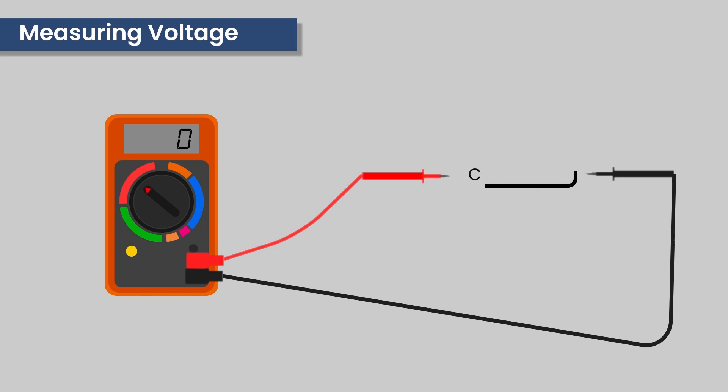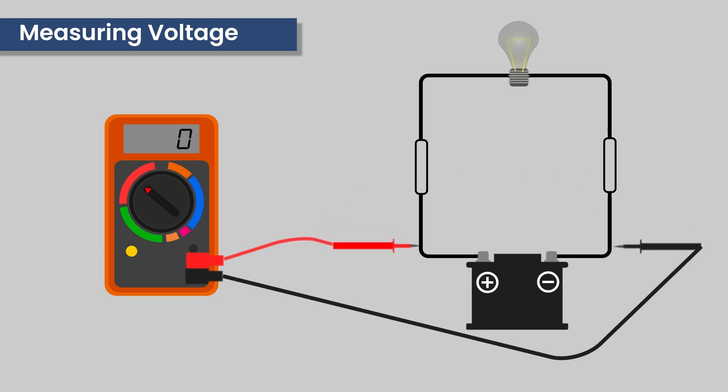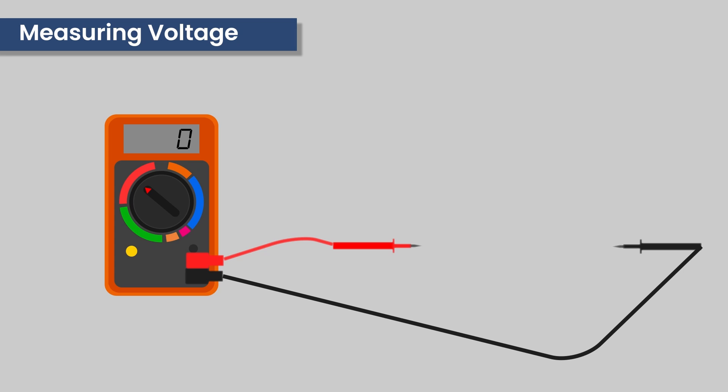When measuring voltage across a component, the multimeter is connected to the connection points of the component. When it comes to circuits, the positive probe must be connected to the point in the circuit that is closest to the voltage supply, and similarly the negative pole to the point in the circuit that is closest to the negative terminal of the voltage supply.